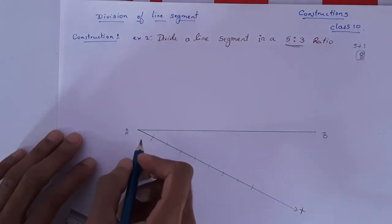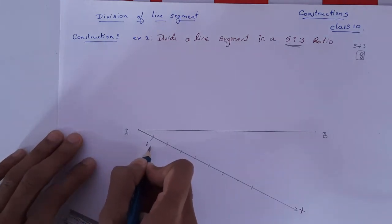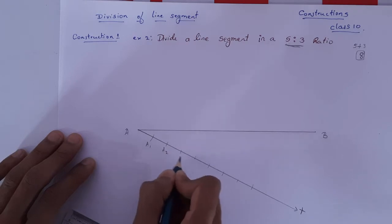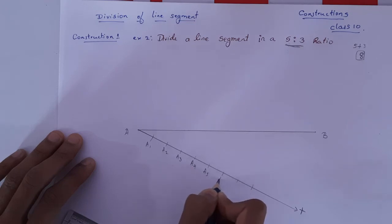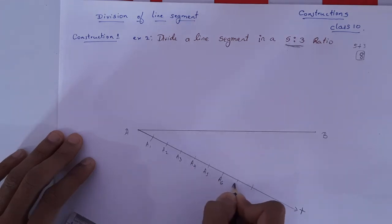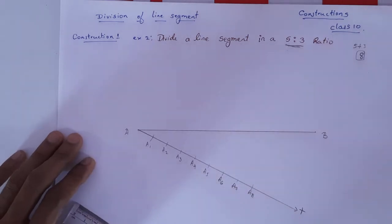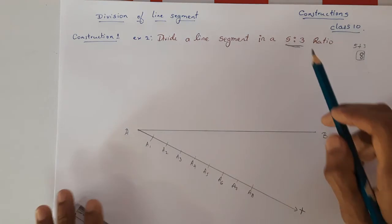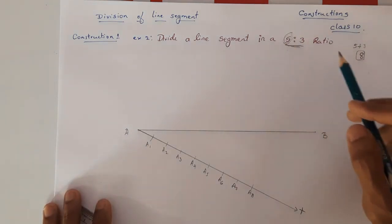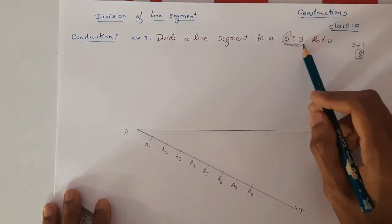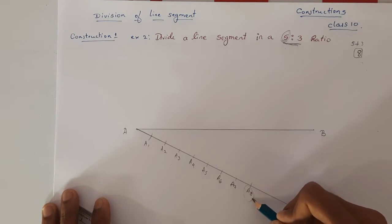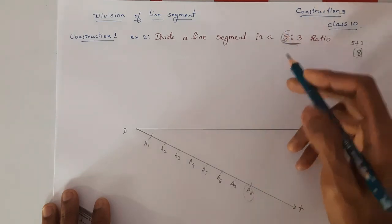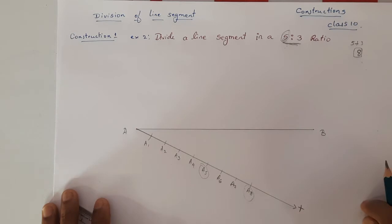After drawing the eight parts, name them: the first point is A1, then A2, A3, A4, A5, A6, A7, and the last one is A8. Most importantly, the first ratio value — that is A5 — and the last point A8 will both play a very important role in the construction.